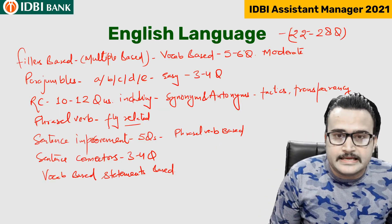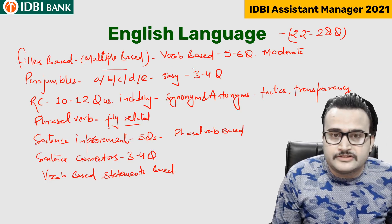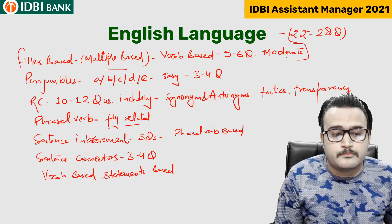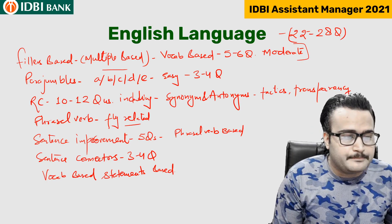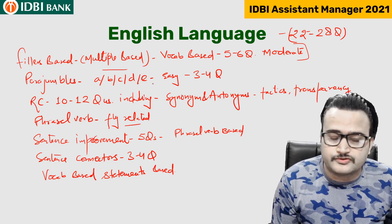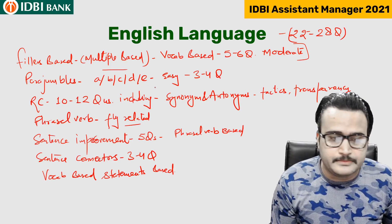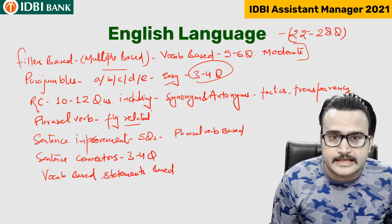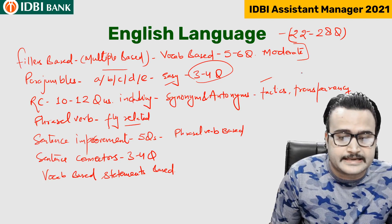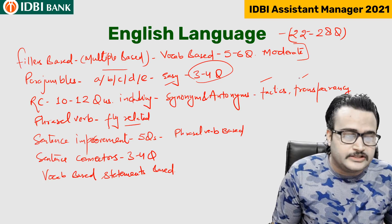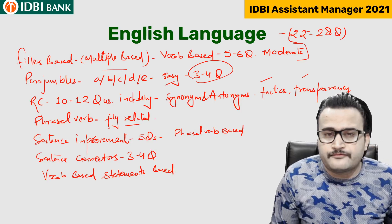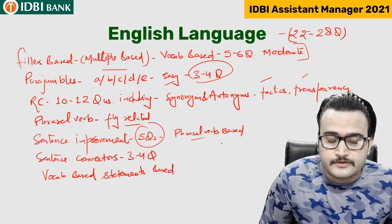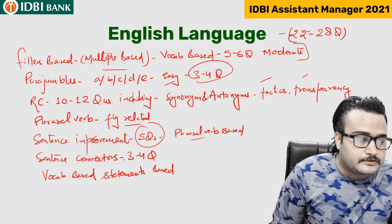In the English Language section: filler-based questions — multiple-type fillers, mostly vocab-based, so these questions were moderate in nature, 5 to 6 questions. Para jumbles — A, B, C, D, E format, easy in nature, 3 to 4 questions. Reading comprehension — 10 to 12 questions. Antonyms and synonyms were also there — for example, words like 'tactics' and 'transparency'. Phrasal verbs were there, including fly-related phrasal verbs. Sentence improvement — 5 questions, mostly phrasal verb based.